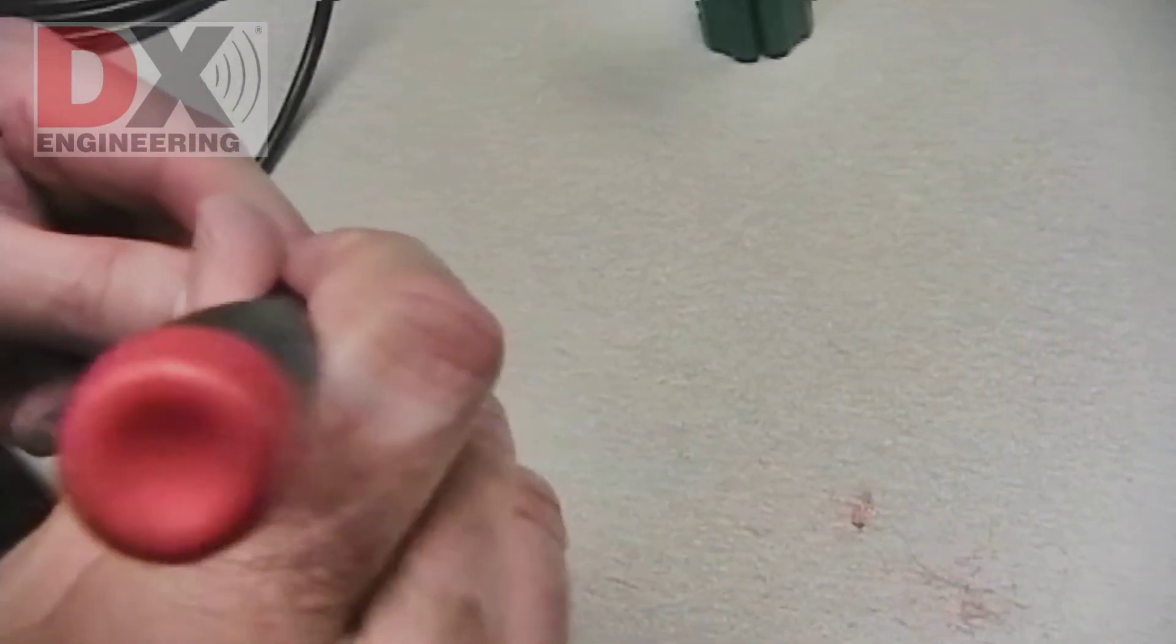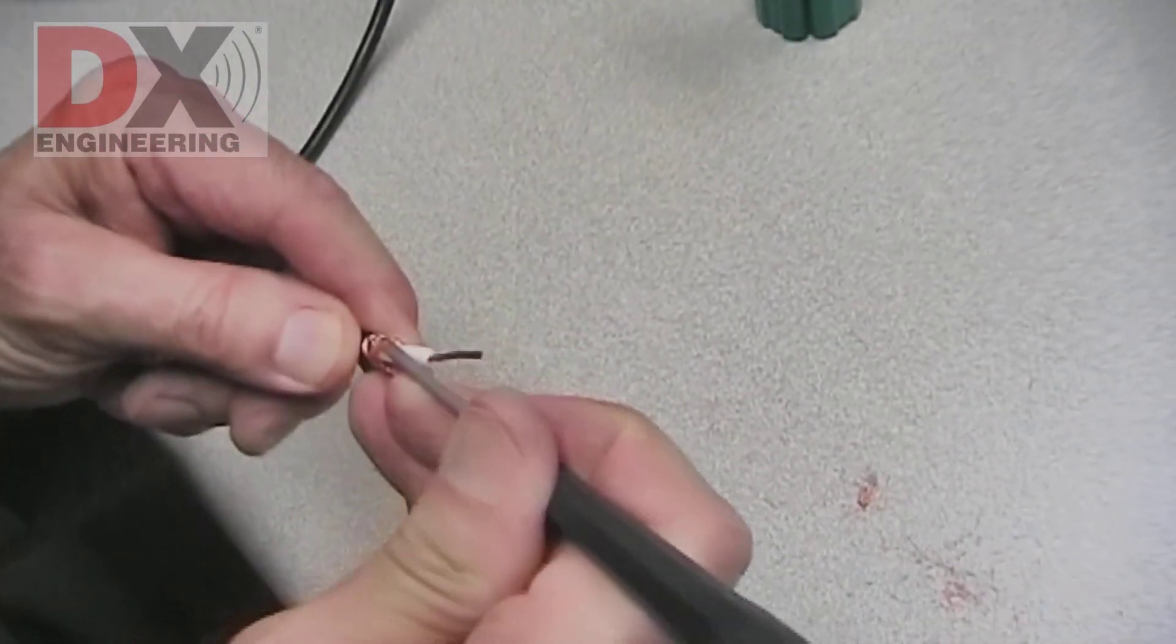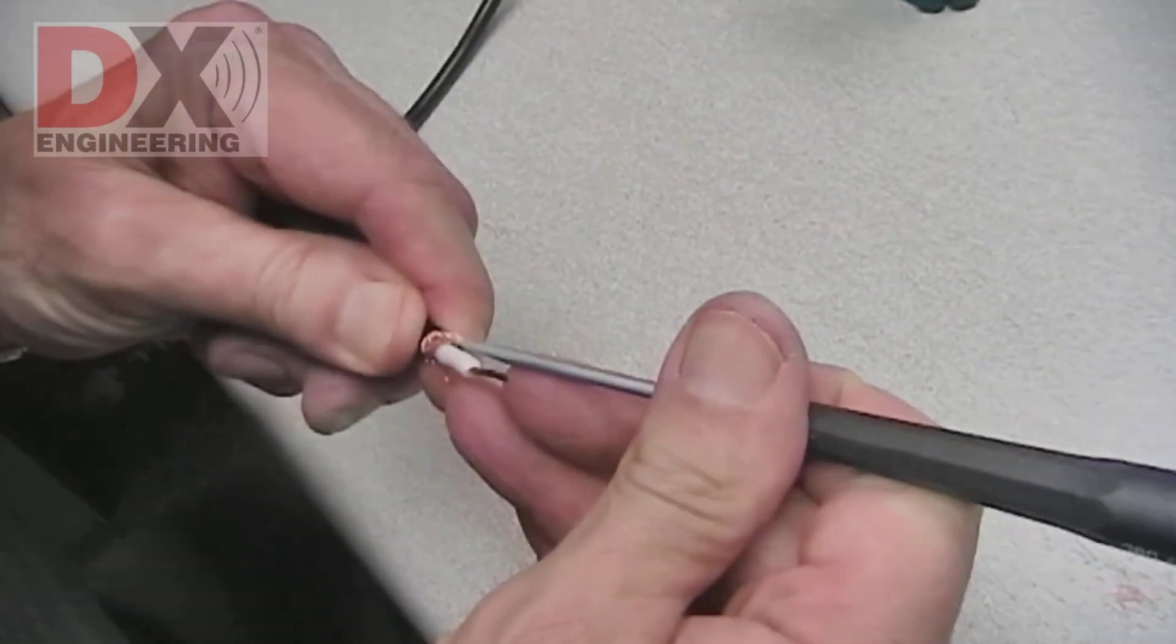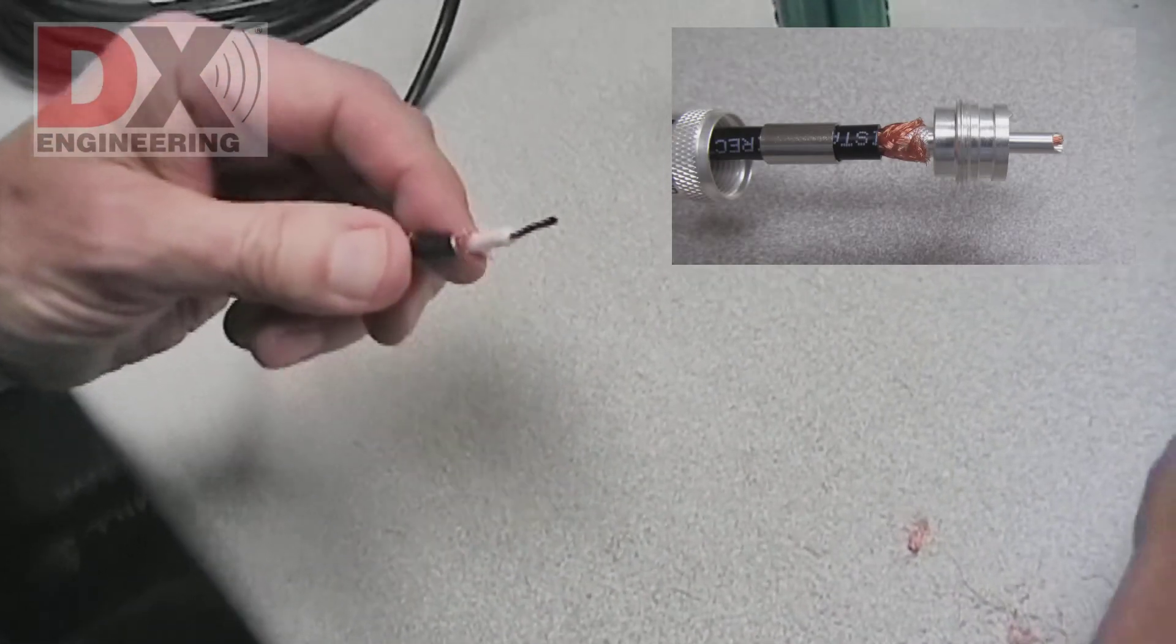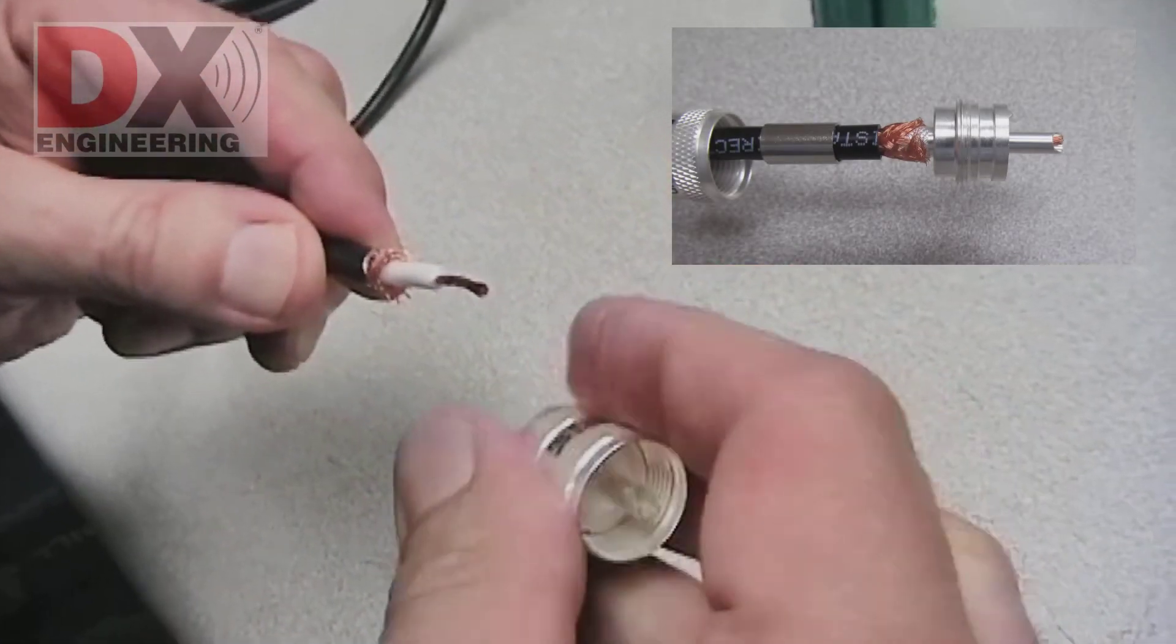You may want to slightly flare the braid to make it easier to push the PL259 on. Keeping the coax cable straight, push the PL259 in place.